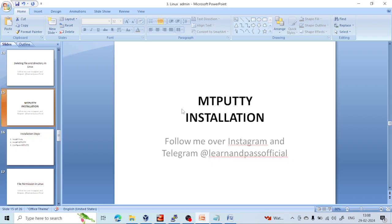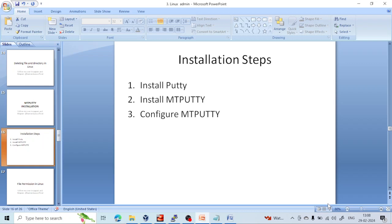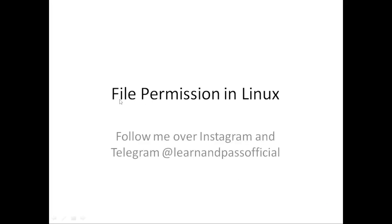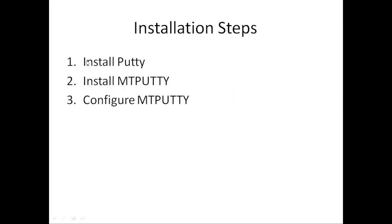So let's see the installation process. We are going to install this in three steps: first, install PuTTY; second, install MobaXterm; and third, configure MobaXterm.